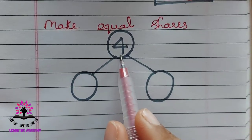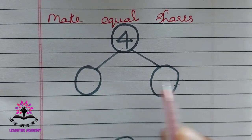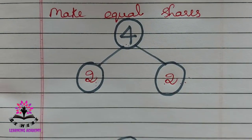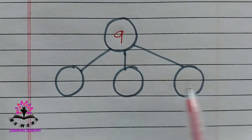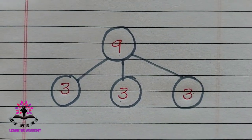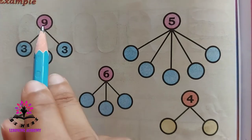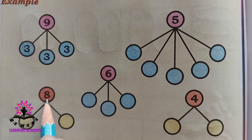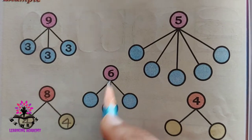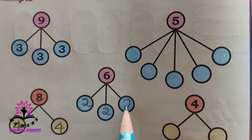Equal shapes — four is there, you have to share in two boxes. When you share four in two boxes, how many will come here? Two each, isn't it? Two here and two here — two plus two is four. Now we have to divide nine in three cases — three plus three plus three is nine. Let us move to the next one: eight divided by two will be four and four — four plus four is eight.